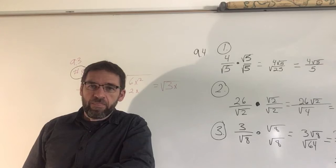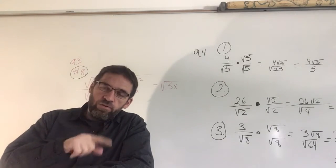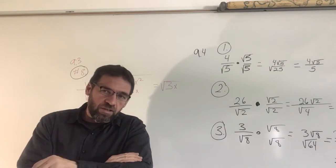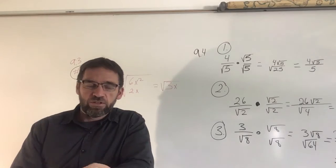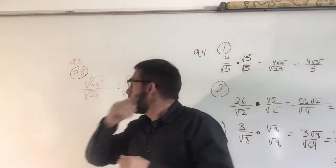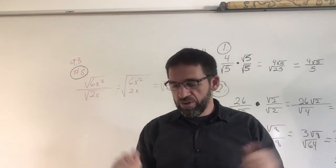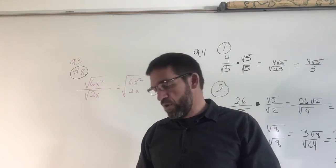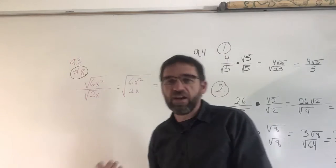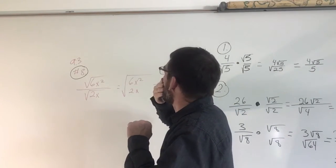Good morning ninth grade. I'm going to go back and do a problem from yesterday — I had a request for problem number eight to be explained. It's just like today's lesson, so I will do that for you. You're reducing — if you want to use simple terms, you're extracting the square root. It's called rationalizing denominators, but you're just breaking them down.